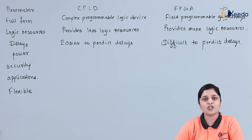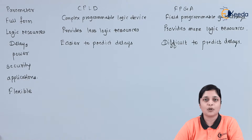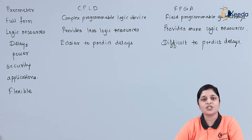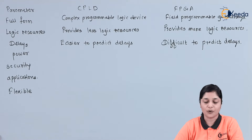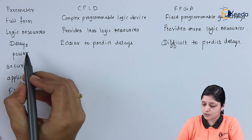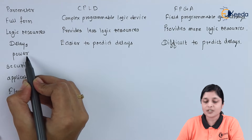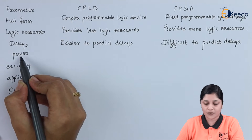CPLD consumes less amount of power and FPGA consumes more amount of power. The next parameter is power consumption.